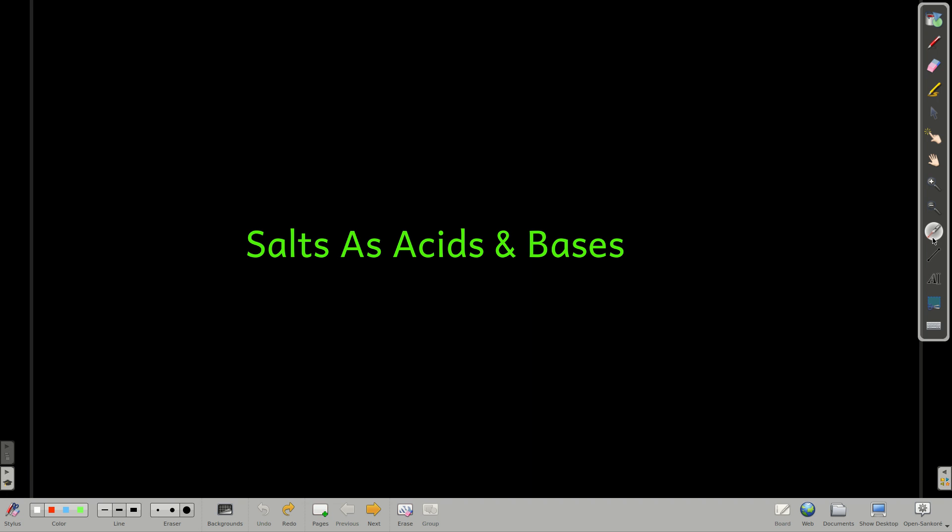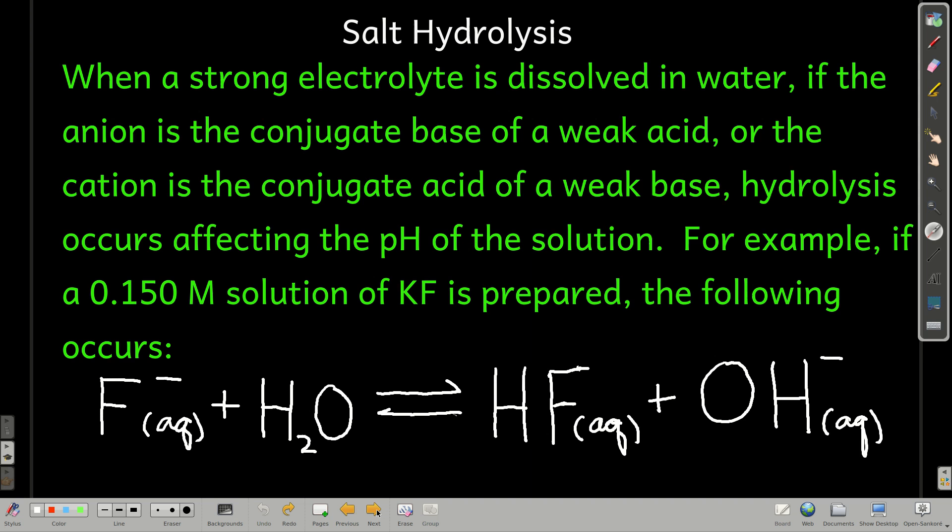In this module, we're going to talk about how salts can act as an acid or a base. And remember, when we say salt, we just mean an ionic compound. I'm sure sodium chloride is the common table salt, but potassium cyanide, for example, is an ionic compound, that's a salt too.